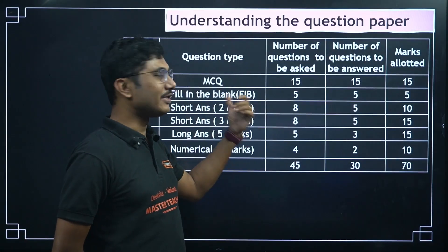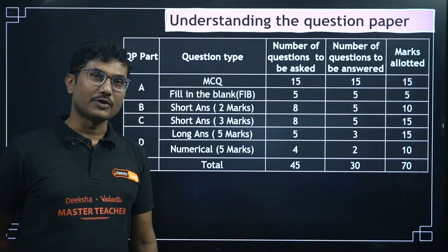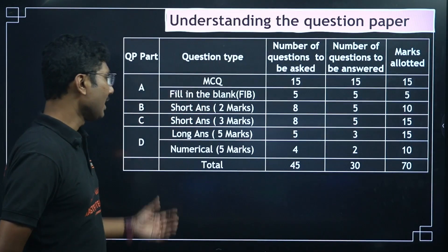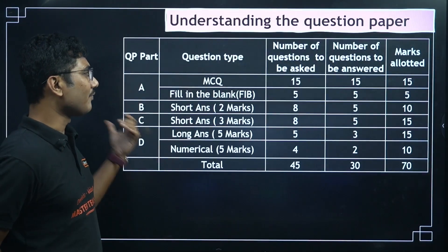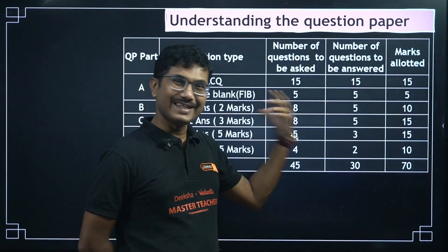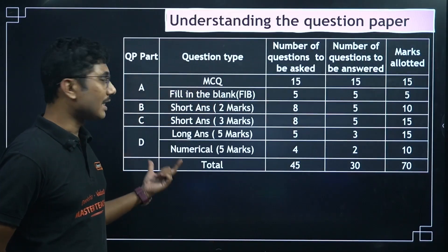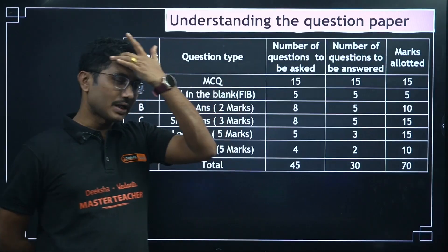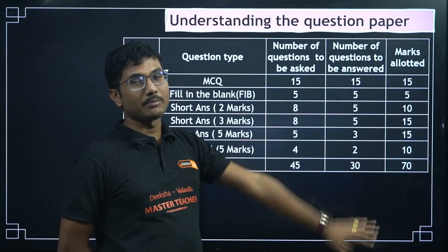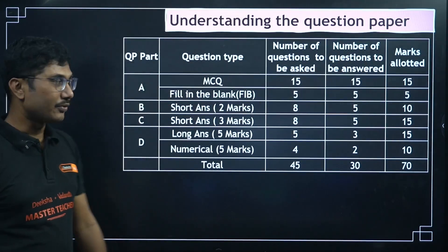For short answer type questions, 8 two-marker questions will be given and you have to answer any 5. For 3-marker short answer questions, again 8 will be given and you have to answer a minimum of 5, making 15 marks total. For long answer type, 5 derivation questions of 5 marks each will be given and you answer 3. For numericals, 4 questions of 5 marks each are given and you answer 2, making 10 marks. Adding all of them gives 70 marks total.